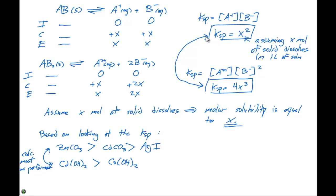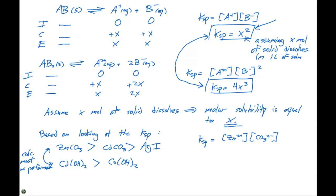For zinc carbonate: KSP = [Zn²⁺][CO₃²⁻] = x² = 1.4×10⁻¹¹, so x = 3.7×10⁻⁶ M. This value of x is the molar solubility of zinc carbonate in aqueous solution. You can't just look at the KSP to determine molar solubility — you have to think and do a calculation.